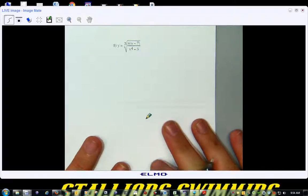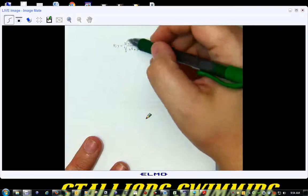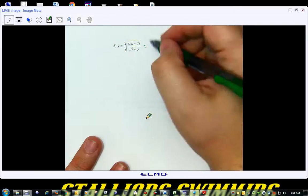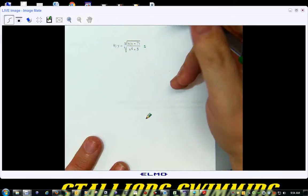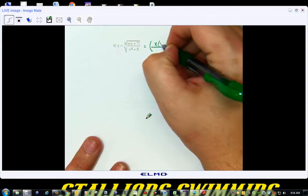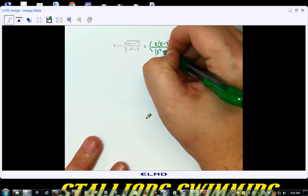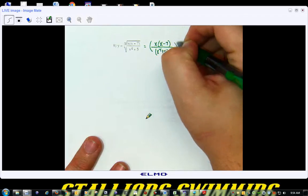Alright, number 8. Now, I'm going to rewrite this right off the bat, since I don't like square roots. I'm going to take this and say it's x times x minus 7 over x to the 4th plus 5 to the 1/3rd power.